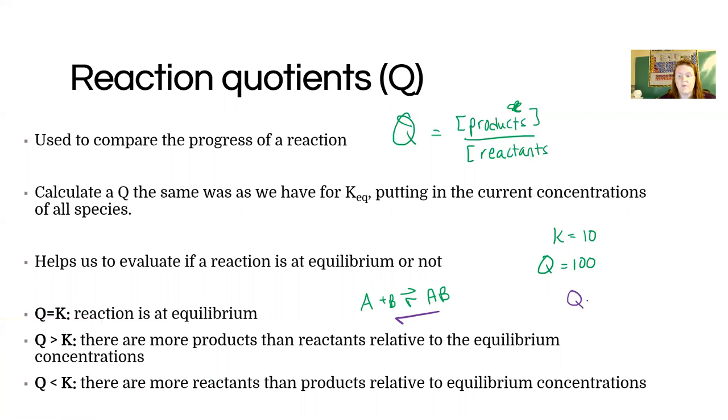If we have a Q bigger than K, the reaction always goes backward to the left. If, on the other hand, we have a Q where it's less than K, that means I have too many reactants, not enough products. That's going to cause the reaction to shift forward. When Q is less than K, the reaction goes forward.